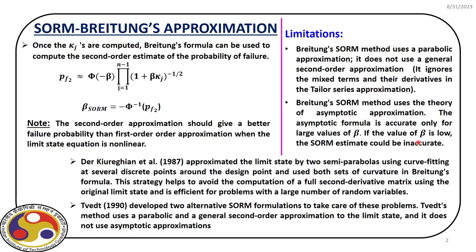Hello everyone. This is the second lecture in the seventh module. In this module, we are discussing second order reliability methods. We have two different models. One we have already discussed in the last class — that is Breitung's model. In this lecture, we are going to discuss the Wets model. But before we do that, let us quickly go through Breitung's approximation that we studied in the last class.